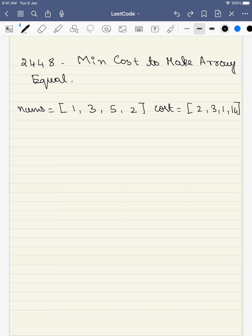In this problem, we are given two arrays: one is the nums array and the other is the cost array. We have to convert all the numbers or make all the numbers equal to one number.